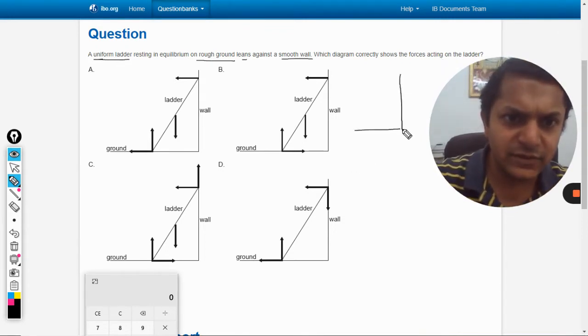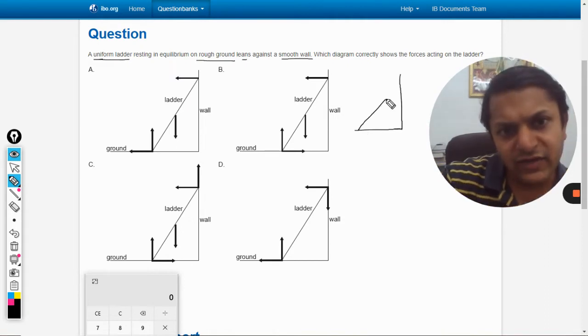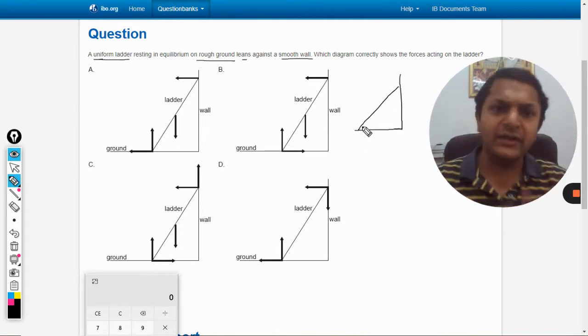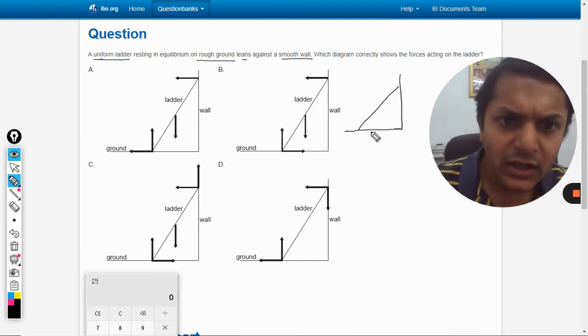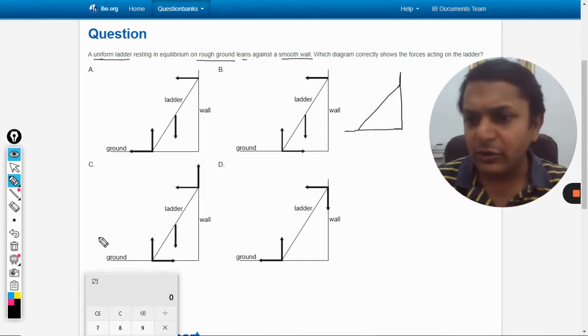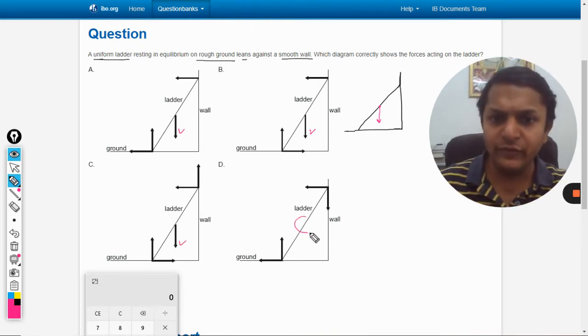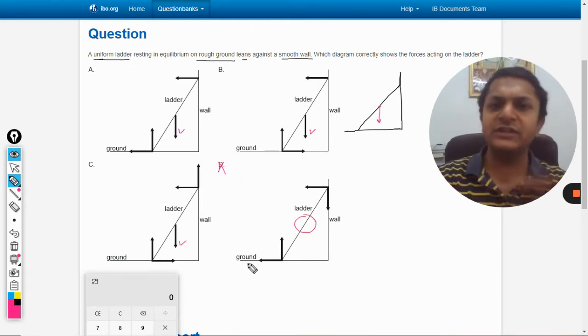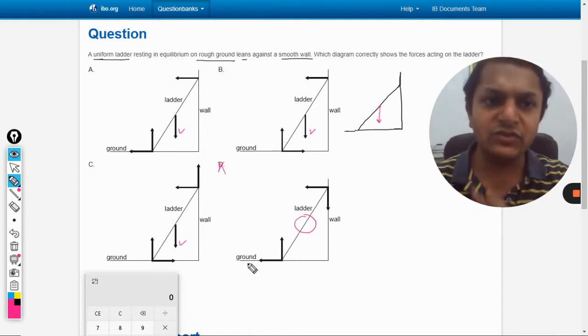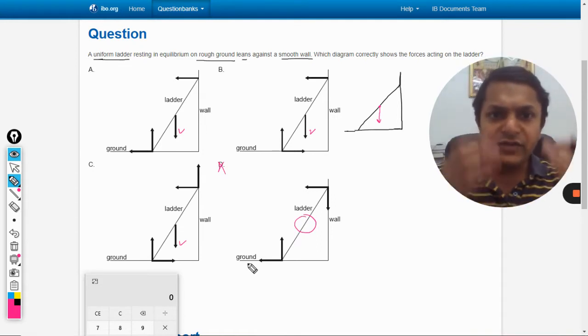This is the diagram. Let's say we are placing a ladder like this. Now what actually happens is there will be weight definitely that would be acting at the center of it. There is weight, so this is absolutely correct. There will be a weight. No weight is shown in D, so D option is absolutely wrong, one thing is sure about that.